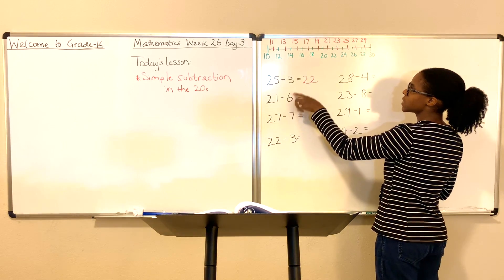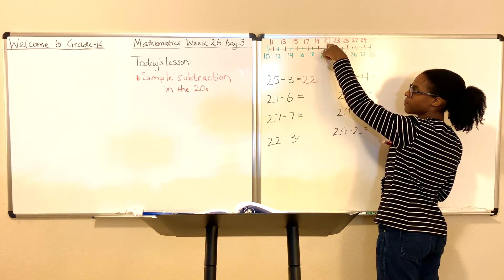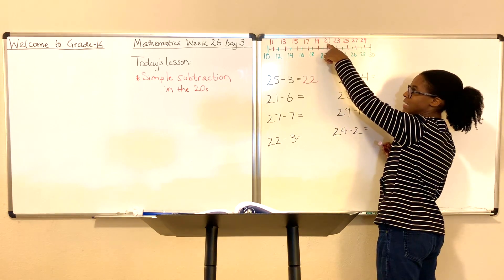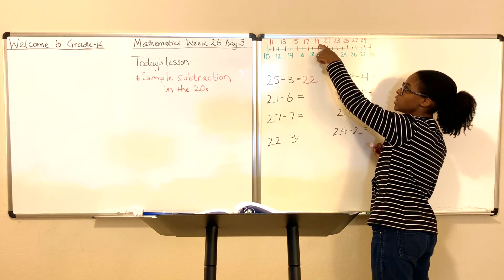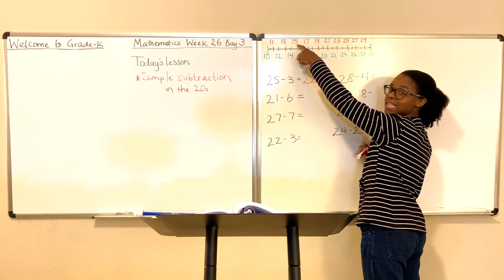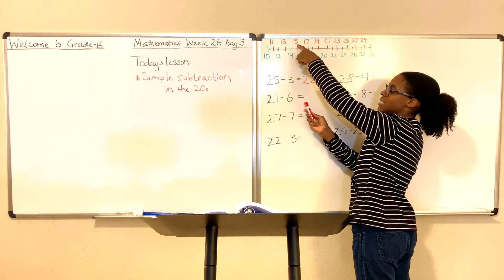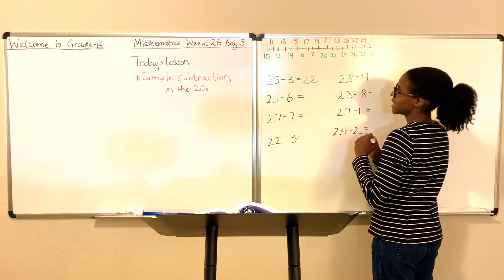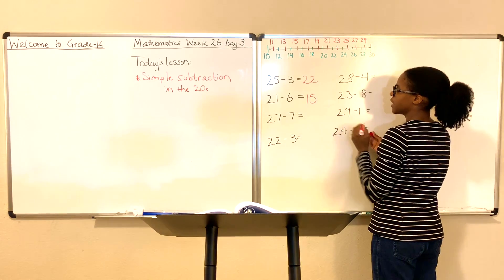21 minus 6. Come up to the number line, find the number 21, and then count backwards by six: one, two, three, four, five, six. 21 minus 6 is 15. Yes, that number is 15.